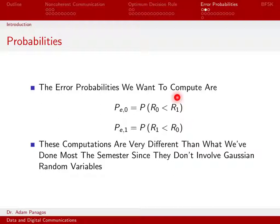Similarly, when I send signal one, an error occurs when R1 is less than R0. So when I write it this way, these probabilities look very simple to compute. But there's a very big difference compared to everything else we've done in this class. These are no longer Gaussian quantities.